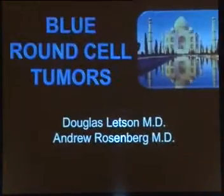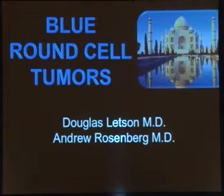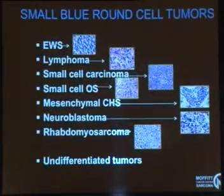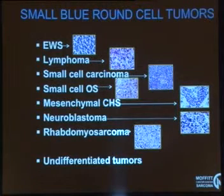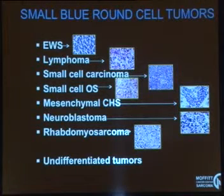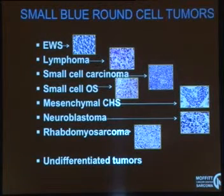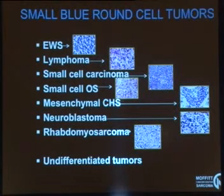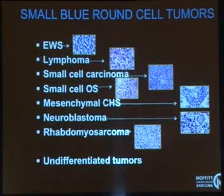Round cell tumors. The blue round cell tumors we will take on here. We're going to be talking about Ewing sarcoma, lymphoma, small cell carcinoma, small cell osteosarcoma, conger sarcoma, neuroblastoma, rhabdomyosarcoma. We're not going to be discussing each of these individually, but just presenting the differential diagnosis of primary and metastatic malignant round cell tumors.